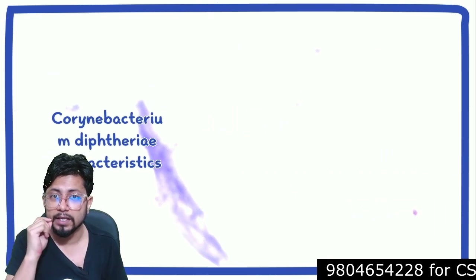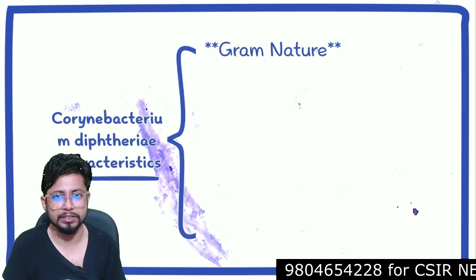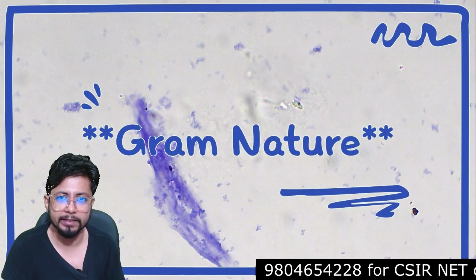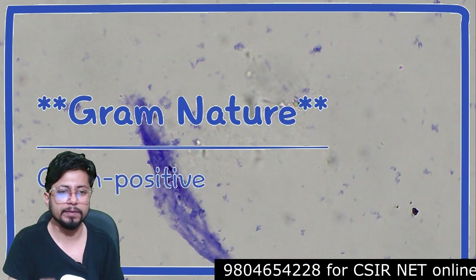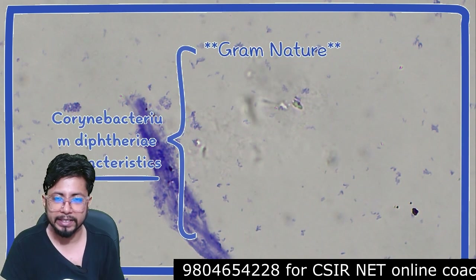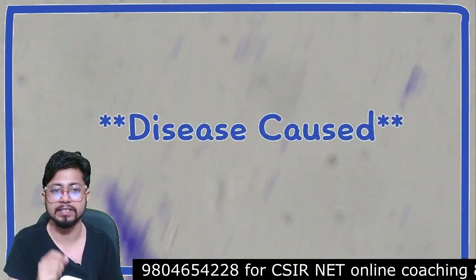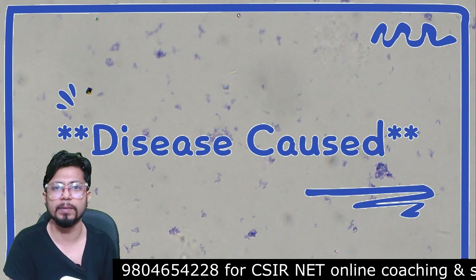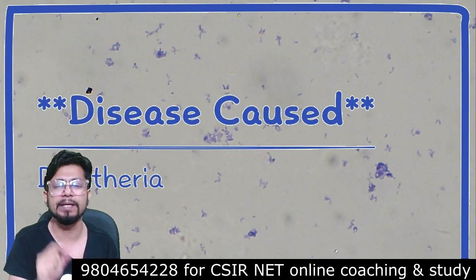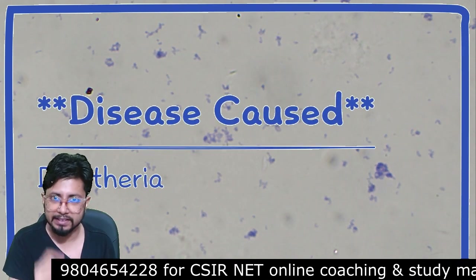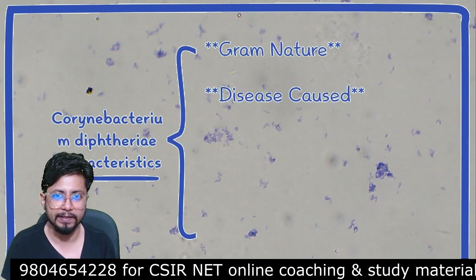Starting with the first important parameter: the gram nature of Corynebacterium diphtheriae. Corynebacterium diphtheriae is a gram positive bacteria. The next important feature is the disease caused by Corynebacterium diphtheriae — diphtheria is the disease caused by this organism.